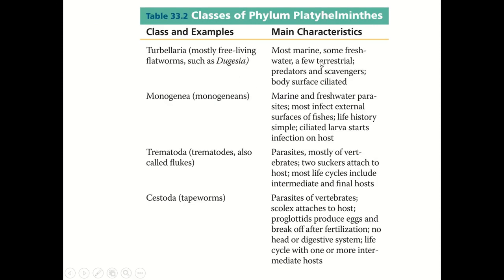For Turbellaria, most are marine, some live in freshwater, and a few are terrestrial; they are predators and scavengers, and their body surface is ciliated. For Monogenea, they are marine and freshwater parasites that mostly infect the external surfaces of fishes; their life history is simple, with a ciliated larva that initiates infection on the host. For Trematoda, they are parasites mostly of vertebrates; they have two suckers attached to the host, and most life cycles include an intermediate and a final host.